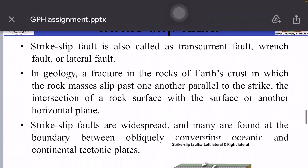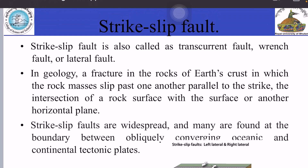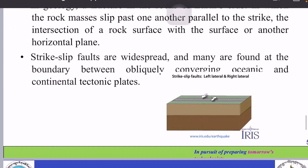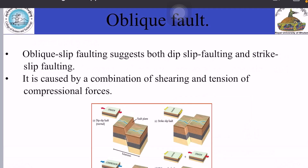Number three: strike-slip fault, also called transcurrent fault, wrench fault, or lateral fault. In geology, it is a fracture in the rock of Earth's crust in which the rock masses slip past one another parallel to the strike — the intersection of a rock surface with the surface of another horizontal plane. Strike-slip faults are widespread and many are found at the boundary between obliquely converging oceanic and continental tectonic plates. There are two types: right-lateral strike-slip fault, known as dextral, and left-lateral strike-slip fault, known as sinistral.